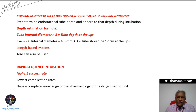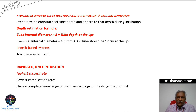Avoid placing the endotracheal tube too deep, as it may enter the right main bronchus. A rough calculation: multiply the internal diameter of the tube by 3 to determine the insertion depth in centimeters. For example, a size 4 tube should be inserted to 12 cm at the teeth. Length-based formulas and Broselow tape also give good success rates.